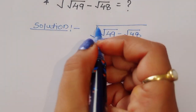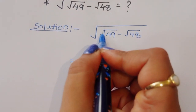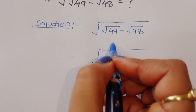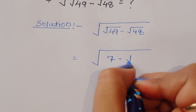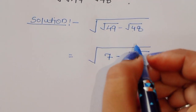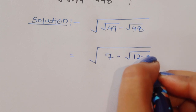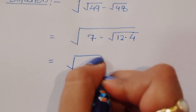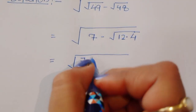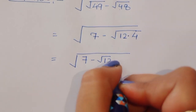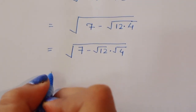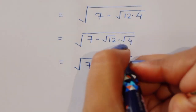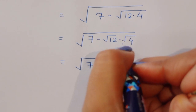We can write the first square root. The next square root is square root of 49, and square root of 49 we can write as 7. So we have square root of 7 minus square root of 48. Now 48 we can write as 12 times 4, so this is equal to square root of 7 minus square root of 12 times 4. Square root of 4 is 2, so we have square root of 7 minus 2 square root of 12.